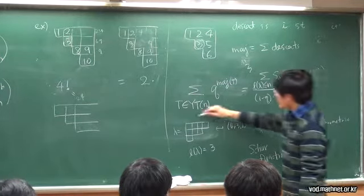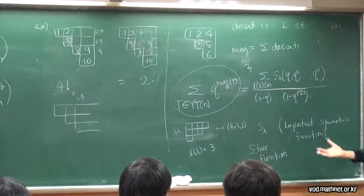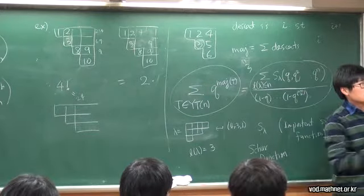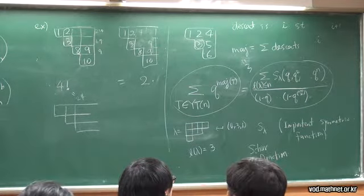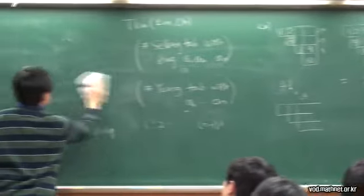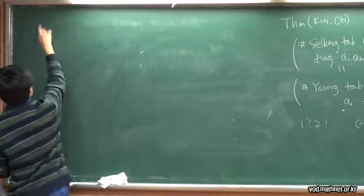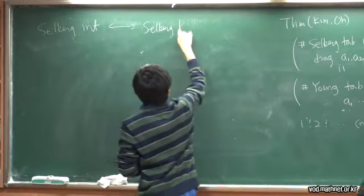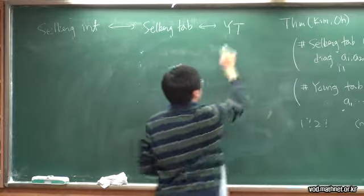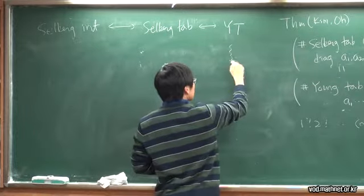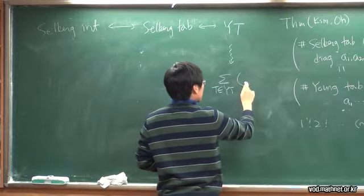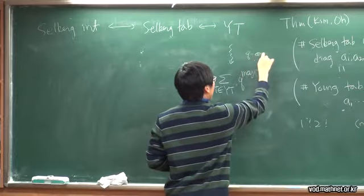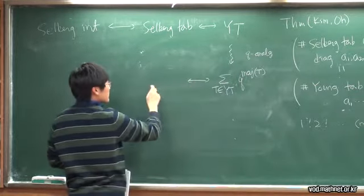This q-analog of the count of Young tableau has a nice expression in terms of Schur functions. To summarize the structure: we have the Selberg integral, which is related to Selberg tableau, which in turn is related to Young tableau. On the q-analog side, we have the q-major index generating function for Young tableau, which is related to Schur functions.